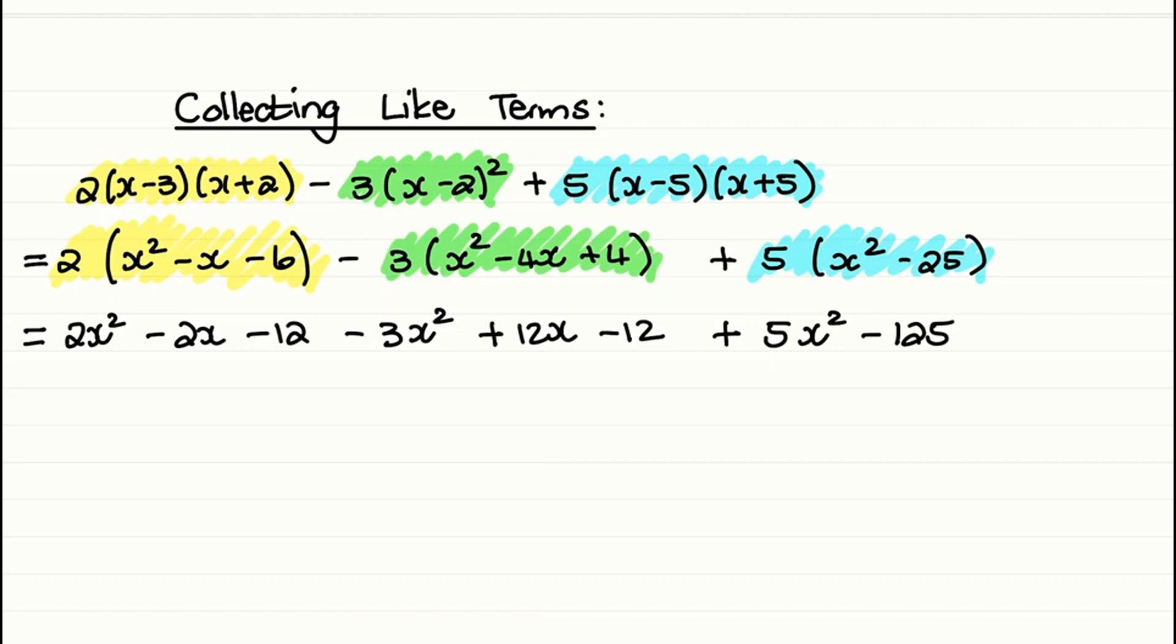Now what we can do is identify like terms. So 2x², -3x² and 5x² are like terms which we can add up together. And that is equal to 4x².